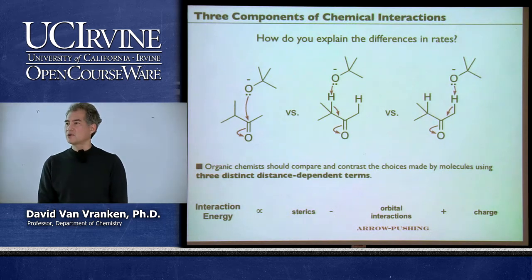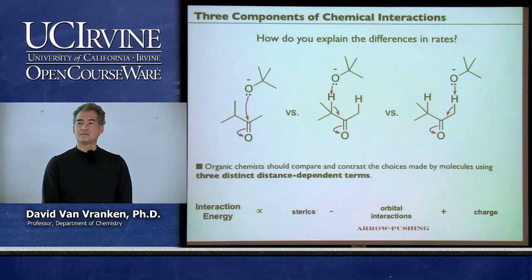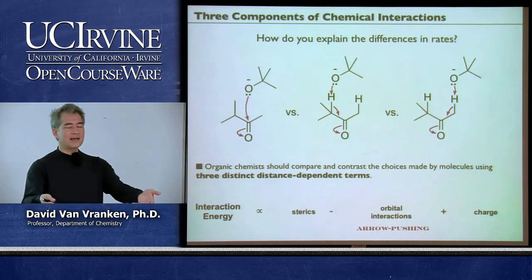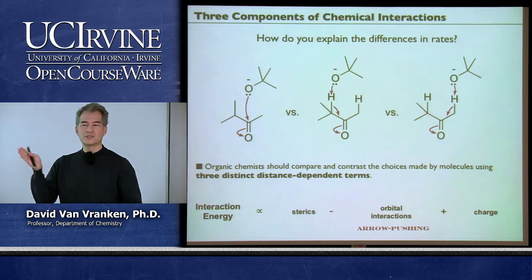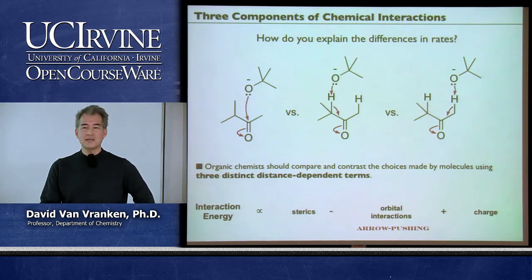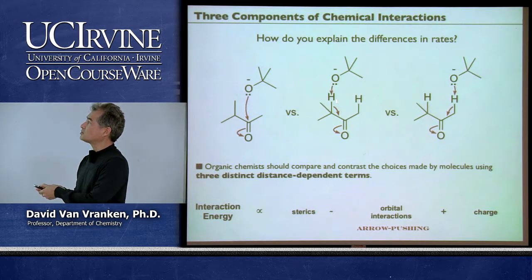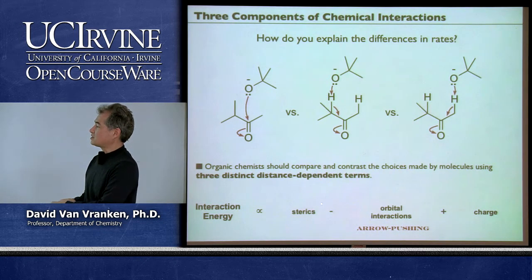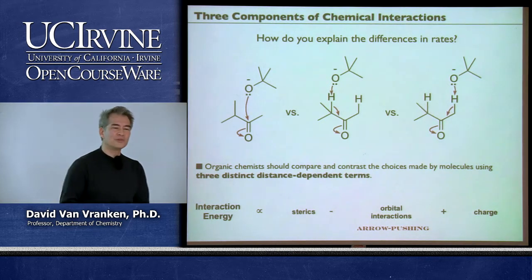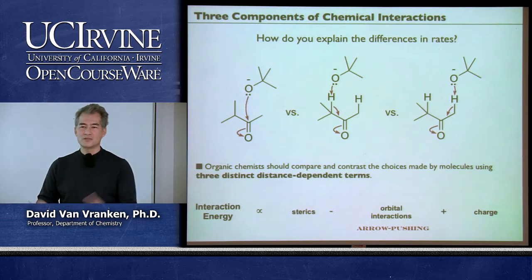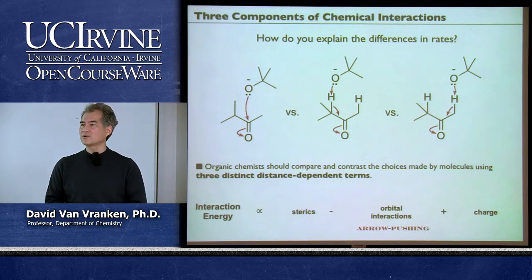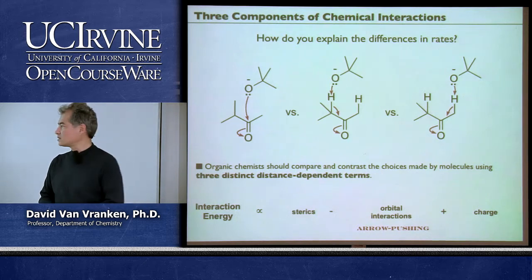If I ask you that on an exam or problem set, how do you explain and justify which pathway is fastest? There are three different factors, all distance-dependent. As two reactants get closer and closer, you need to explain differences in pathways based on either sterics, orbital interactions, or charge. That's it—there are no other things you should use to explain what's going on in your reactions. If you can master these, you'll have a handle on organic chemistry and be able to predict what's fast and what's slow.